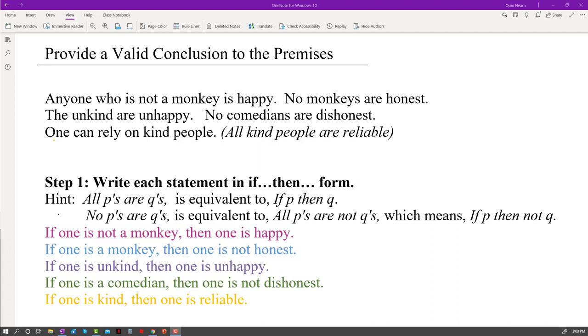Hi, I'm Ms. Hearn. Let's get started. This is the third video in a series in which we find a valid conclusion when we're given the premises of an argument. The premises we were given were anyone who is not a monkey is happy, no monkeys are honest, the unkind are unhappy, no comedians are dishonest, and one can rely on kind people.